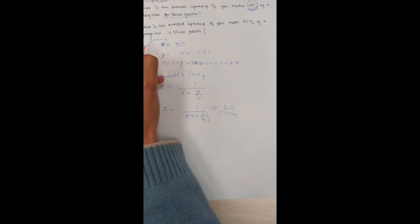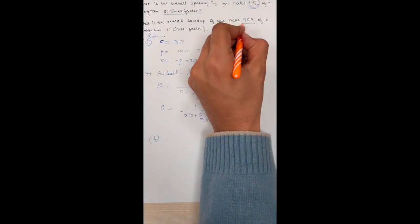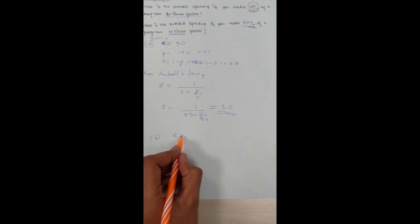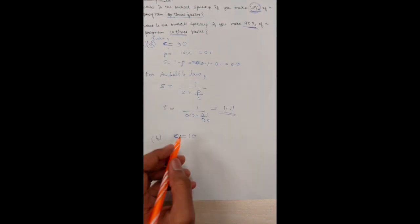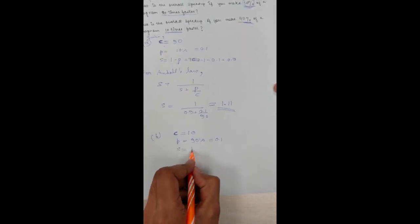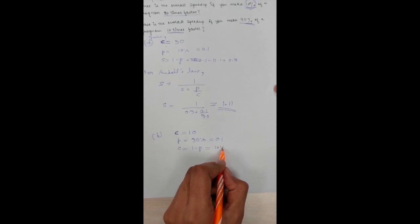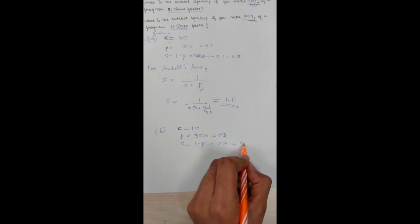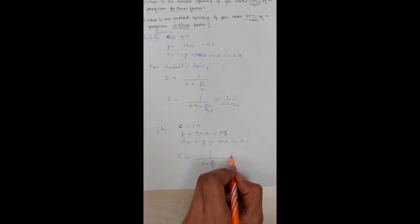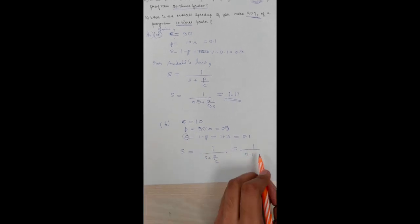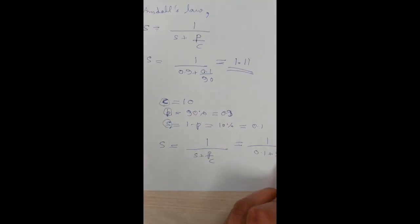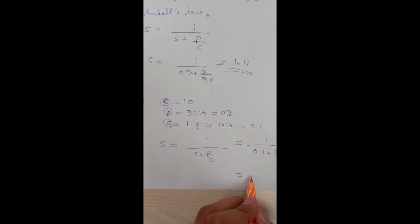Similarly, this was part A. Similarly, for part B, I want to make 90% of a program 10 times faster. The rest 10% is going into the serial processor. Here, my number of cores is always 10 because I want to make it 10 times faster. And similarly, P will always be 90%, which is 0.9. And S will be 1 minus P as always, which is 10%, or 0.1. So speed up overall using Amdahl's law will be 1 upon (S + P/C), which is 1 upon (0.1 + 0.9/10). And after calculating it, I get the answer is 5.26.